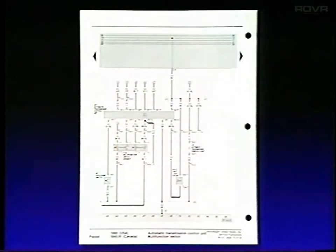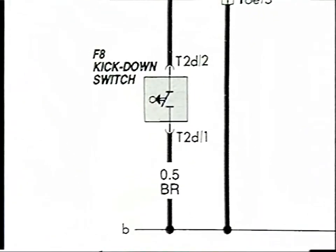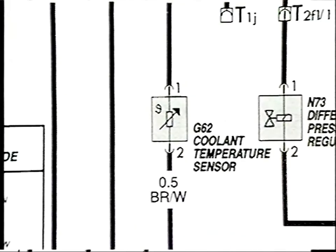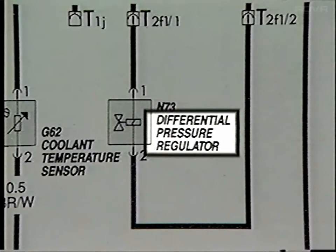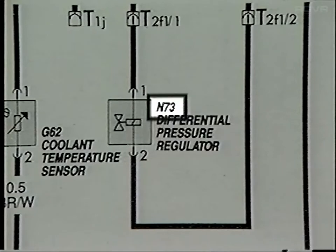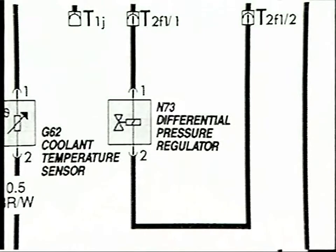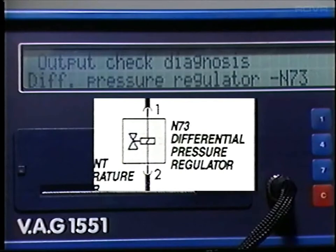The last thing we'll look at in this program is the use of symbols in wiring diagrams. Every part or component shown in a wiring diagram is illustrated using an electrical symbol which identifies it as a switch, a solenoid, a temperature sensor, or whatever the part is, with the name of each part printed next to it. This is preceded by a letter and number combination also used to identify each part, and these numbers are used by the 1551 diagnostic tester to identify electrical components.